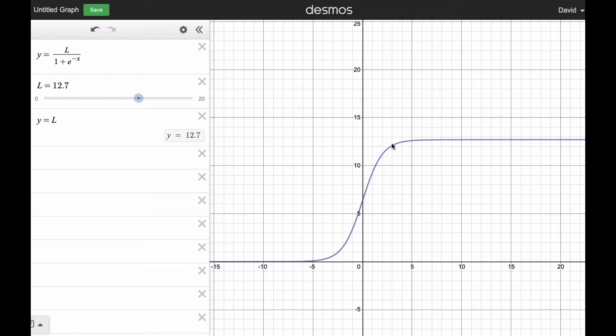And this often is, populations often have this when they hit their maximum value. So if I take this slider and move L back and forth, you can see that the curve moves up and down, the top part moves up and down with that L.